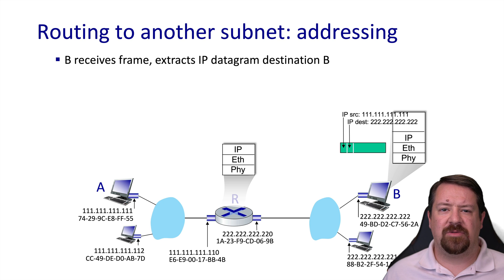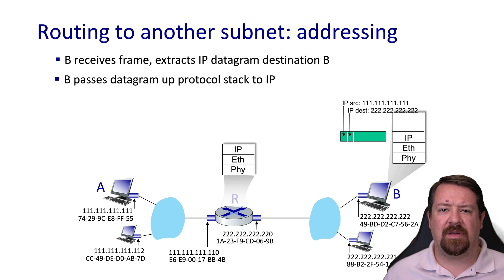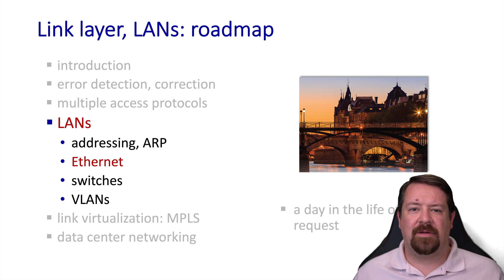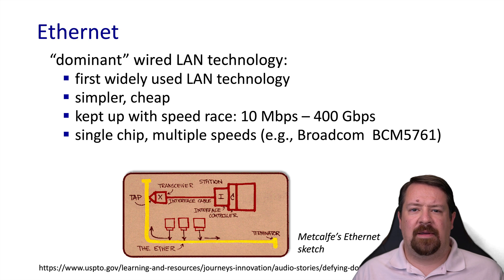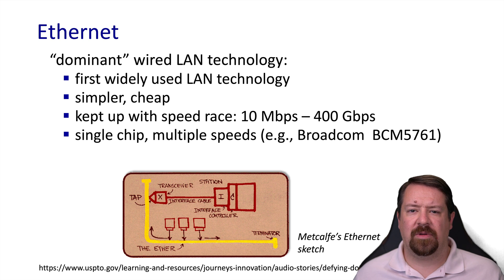Now that we know enough about MAC addressing and ARP, let's explore Ethernet in more detail. Ethernet is the dominant LAN technology today — certainly there have been others in the past, but at this point there are few, if any, real competitors. Its success is largely due to the simplicity of the CSMA-based protocol design, which has also helped it keep up with the speed race, with up to 400 Gbps possible today.